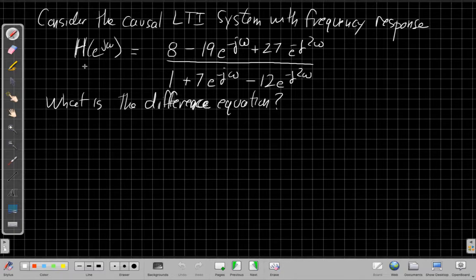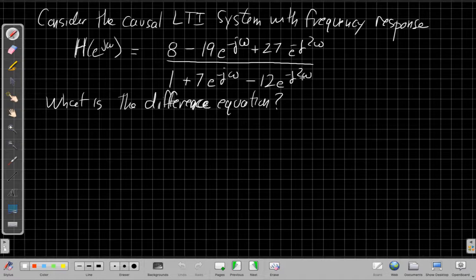So for this video, just to show you a typical example, if I have a causal LTI system with a frequency response that looks like this, H of e to the j omega, it's just to make up numbers, 8 minus 19 e to the minus j omega plus 27 times e to the minus j 2 omega, and the denominator is 1 plus 7 e to the minus j omega minus 12 e to the minus j 2 omega.